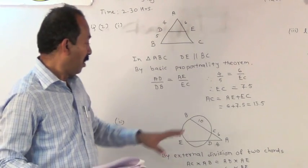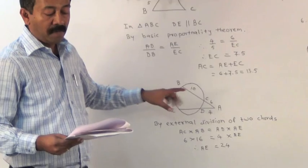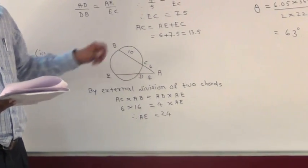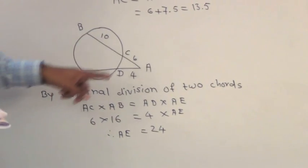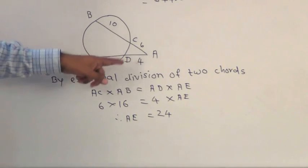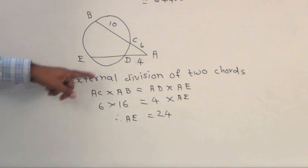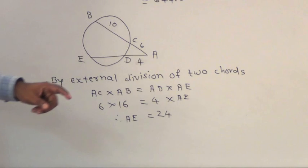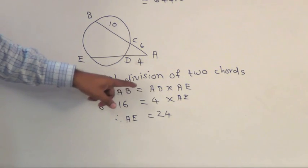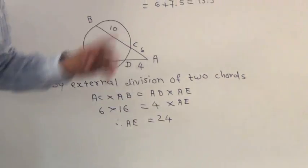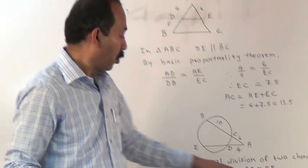In next question, in the figure, chord BC and chord ED intersect in point A externally. BC is 10, AC is 6, AD is 4. So, we have to find out the length of AE. Now, by external division of two chords, we get AC into AB is equal AD into AE. Substituting the values, we get 6 into 16 is equal to 4 into AE. So, AE is equal to 24. Value of AE is 24 units.